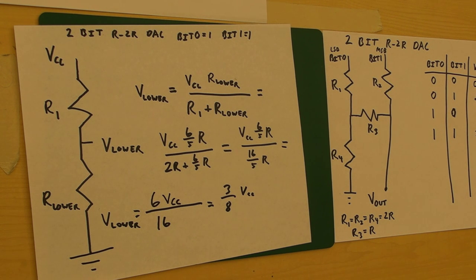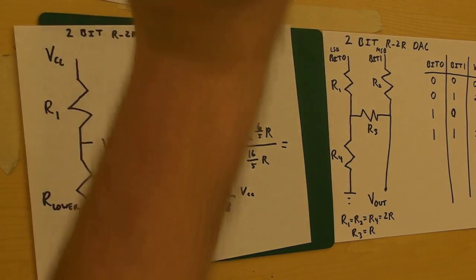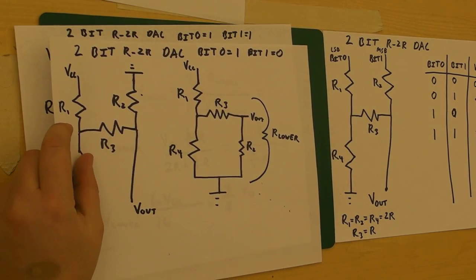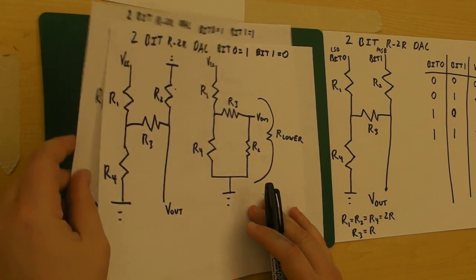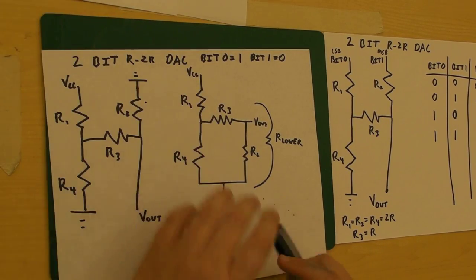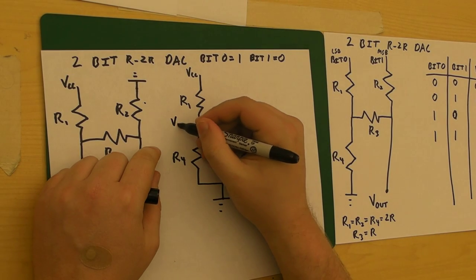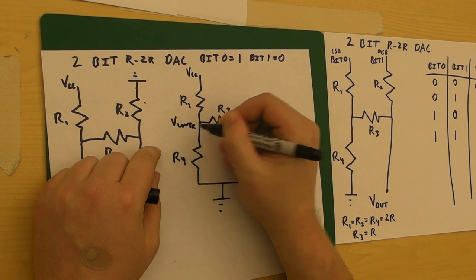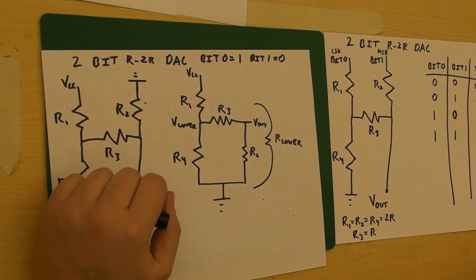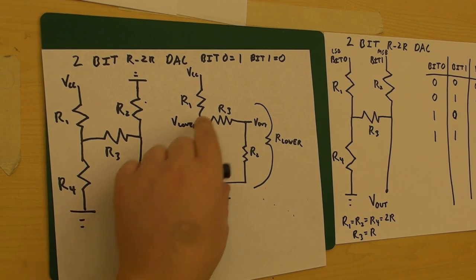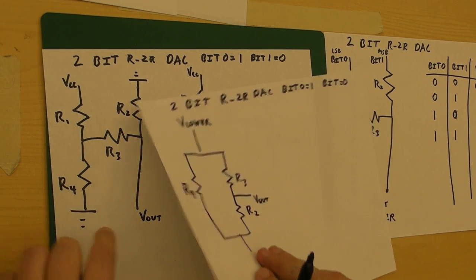However, that's not quite what we need yet. Going back to our circuit here, we need to find V out here. Hmm, that's a problem. But we now have V lower. Well, let's do the same trick again. Let's take this bottom part as a separate circuit.